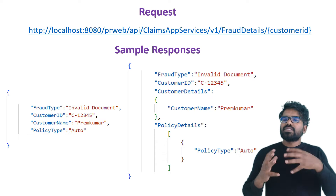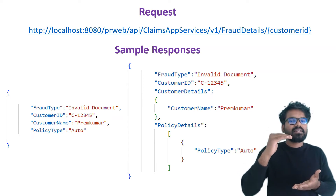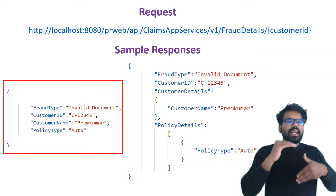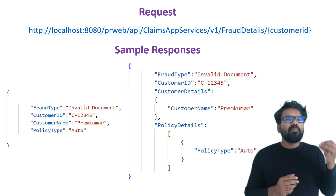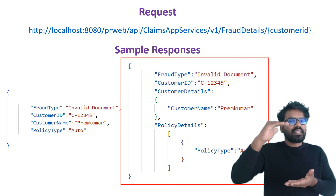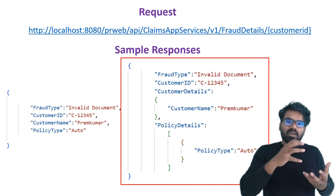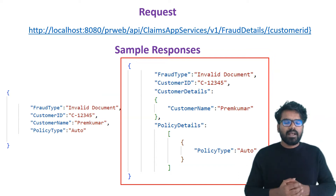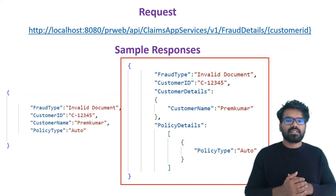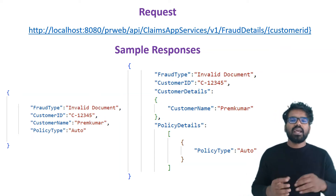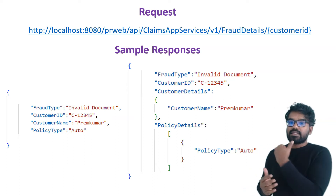I can provide only these four details inside the response object. In JSON, every data is going to be under at least one object represented by curly braces. Under the response object I can have the four fields directly, or I can also have some more detailed embedded objects in my response. For example, in the second sample the response object contains fraud type and customer ID, and then an embedded object called customer details that holds the customer name, and also an array which holds the policy details — showing what types of policy are related to the customer.